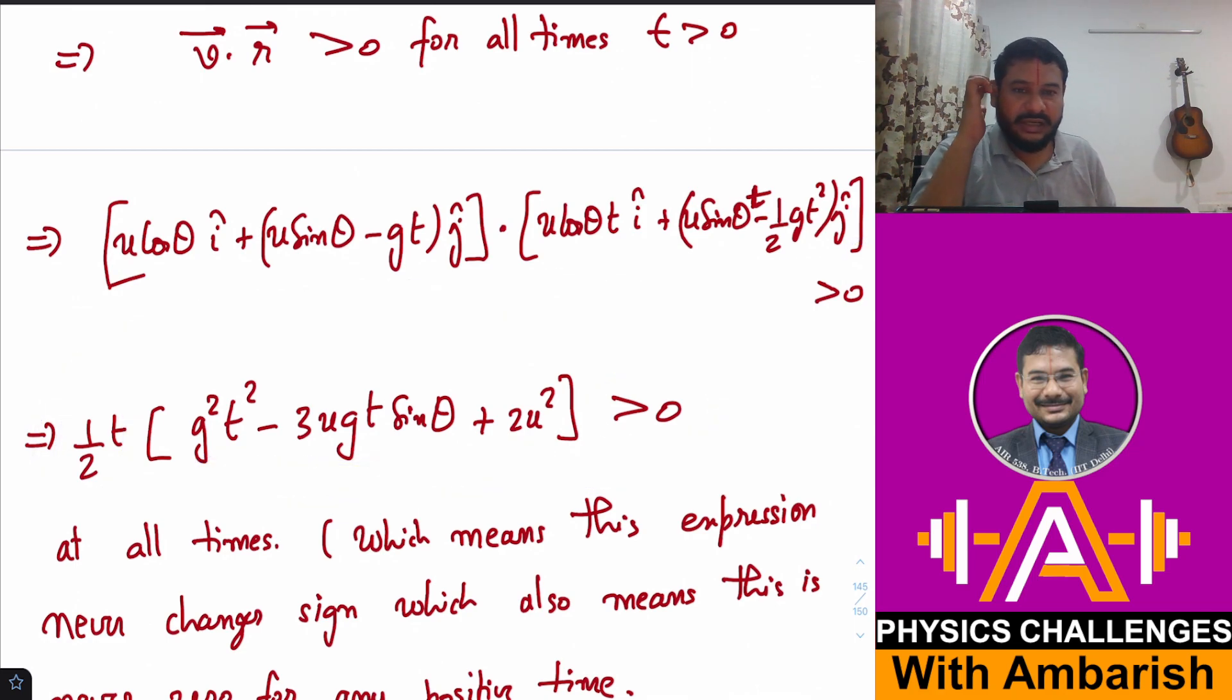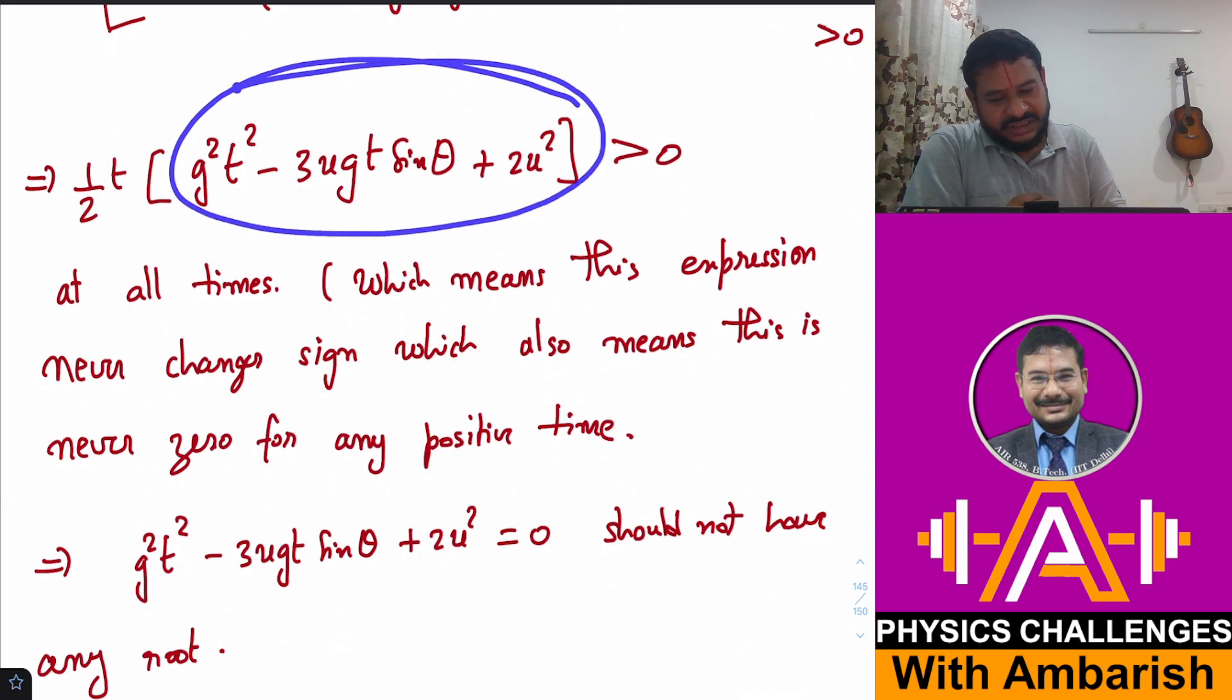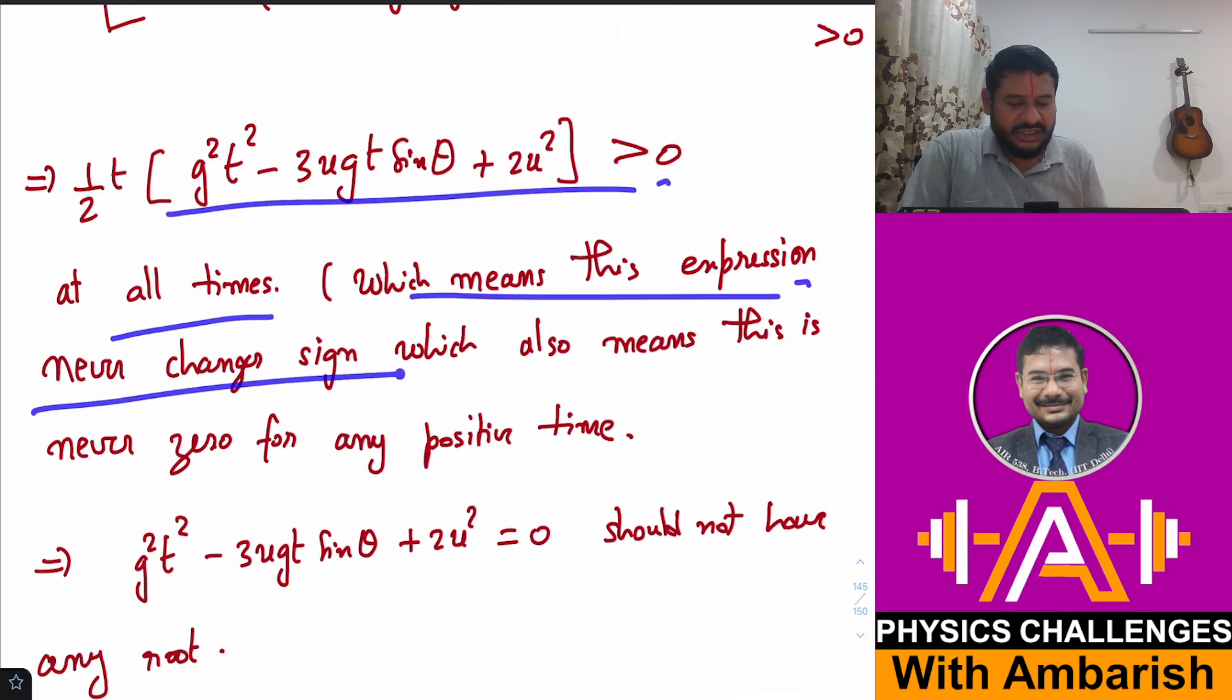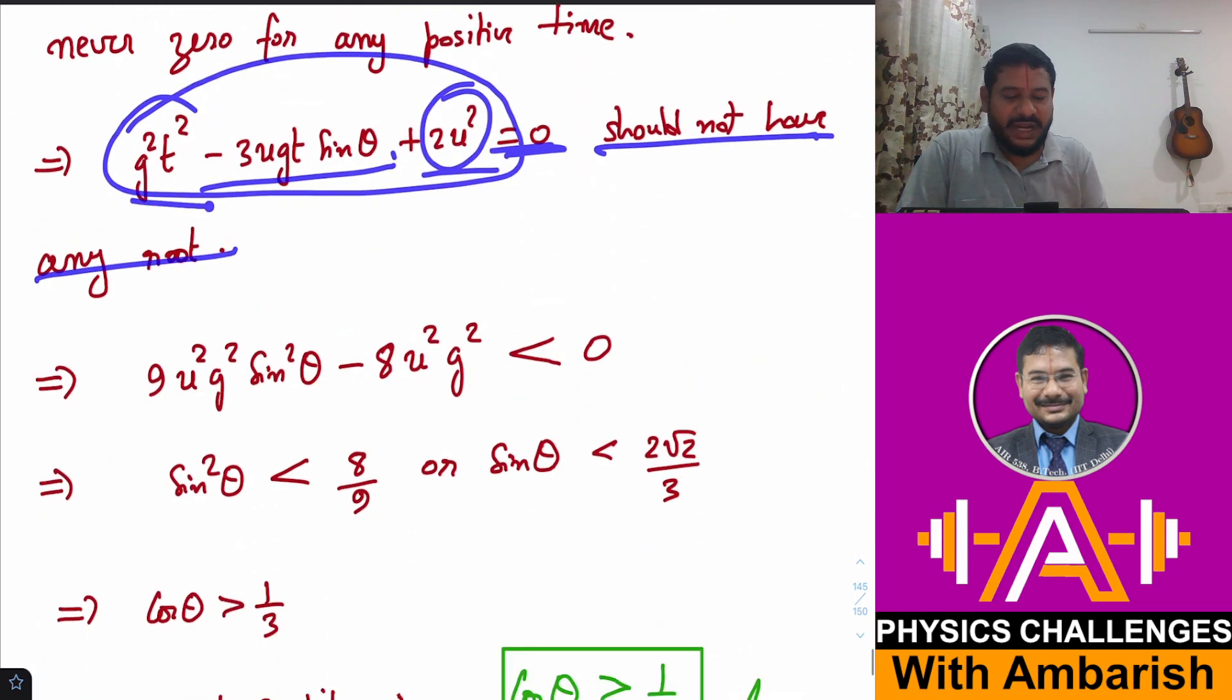Of course time is positive, that means this expression should never become zero. Initially this expression is positive and it should remain positive, which means it should never pass through zero. Therefore this term being equal to zero should have no root whatsoever - it should have only imaginary roots. This is greater than zero at all times, which means this expression never changes sign, which also means this is never zero for any positive time.